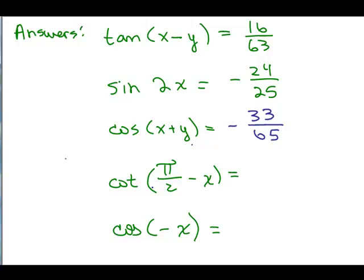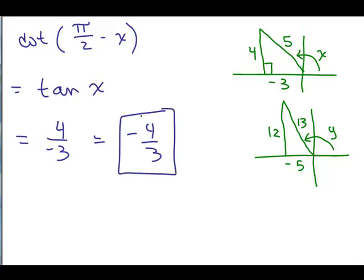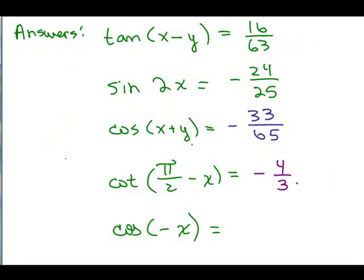So for the cosine of x plus y, we just did that problem and we got negative 33 sixty-fifths. All right, what's next? Cotangent of pi over 2 minus x. All right, now you should recognize this as one of the co-functions. The cotangent of 90 degrees minus x is the same thing as the tangent of x. So that's the fast and easy way to do that. That's the same thing as the tangent of x. Now if you forgot that, you could go ahead and rewrite that as 1 over the tangent of pi over 2 minus x. Use the formula but it would take a lot longer. Much better to know that this is always true. And now we just look over here and say what's the tangent of x? It's 4 over negative 3, which is negative 4 thirds. So that's our fourth part. Our answer is negative 4 thirds.